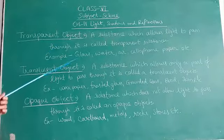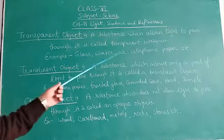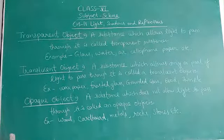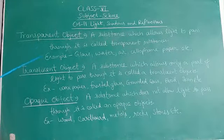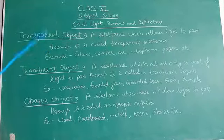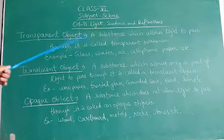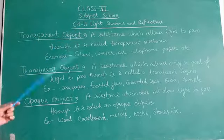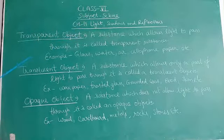Examples of transparent objects are glass, water, air, cellophane paper, etc. The substance from which we can see clearly, or which allows light to pass through it, is called a transparent substance.